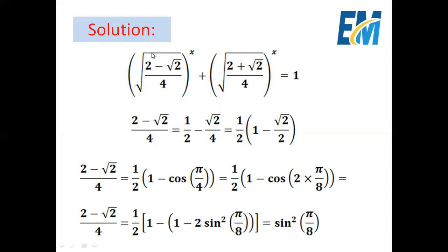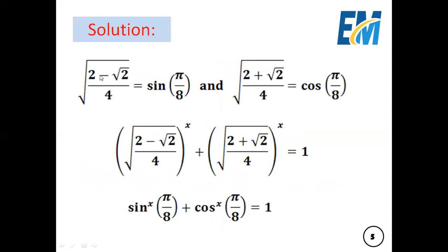Therefore, (2 minus square root of 2) all over 4 equals sine squared of pi over 8. So this term with the square root equals sine of pi over 8, because sine of pi over 8 is positive. So square root of (2 minus square root of 2) over 4 equals sine of pi over 8. Using the same logic, we can find that square root of (2 plus square root of 2) over 4 equals cosine of pi over 8.